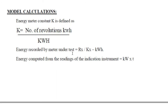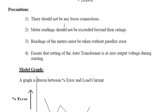Precautions: there should be no loose connections while connecting the circuit. Make sure there are no loose connections. Meter readings should not exceed the ratings — here we have a 5 amps rating, so the current should not exceed 5 amps. Take the readings carefully.